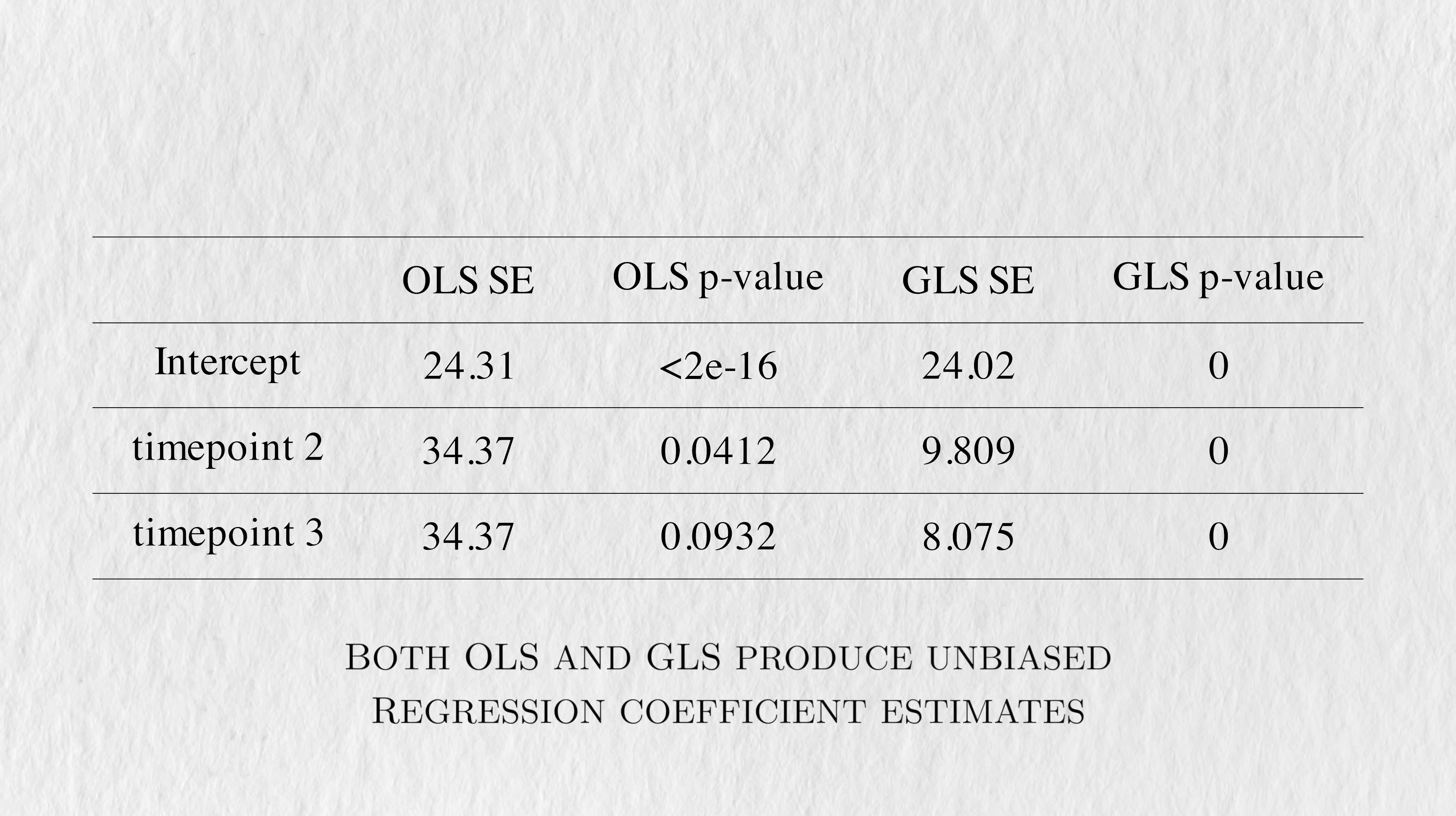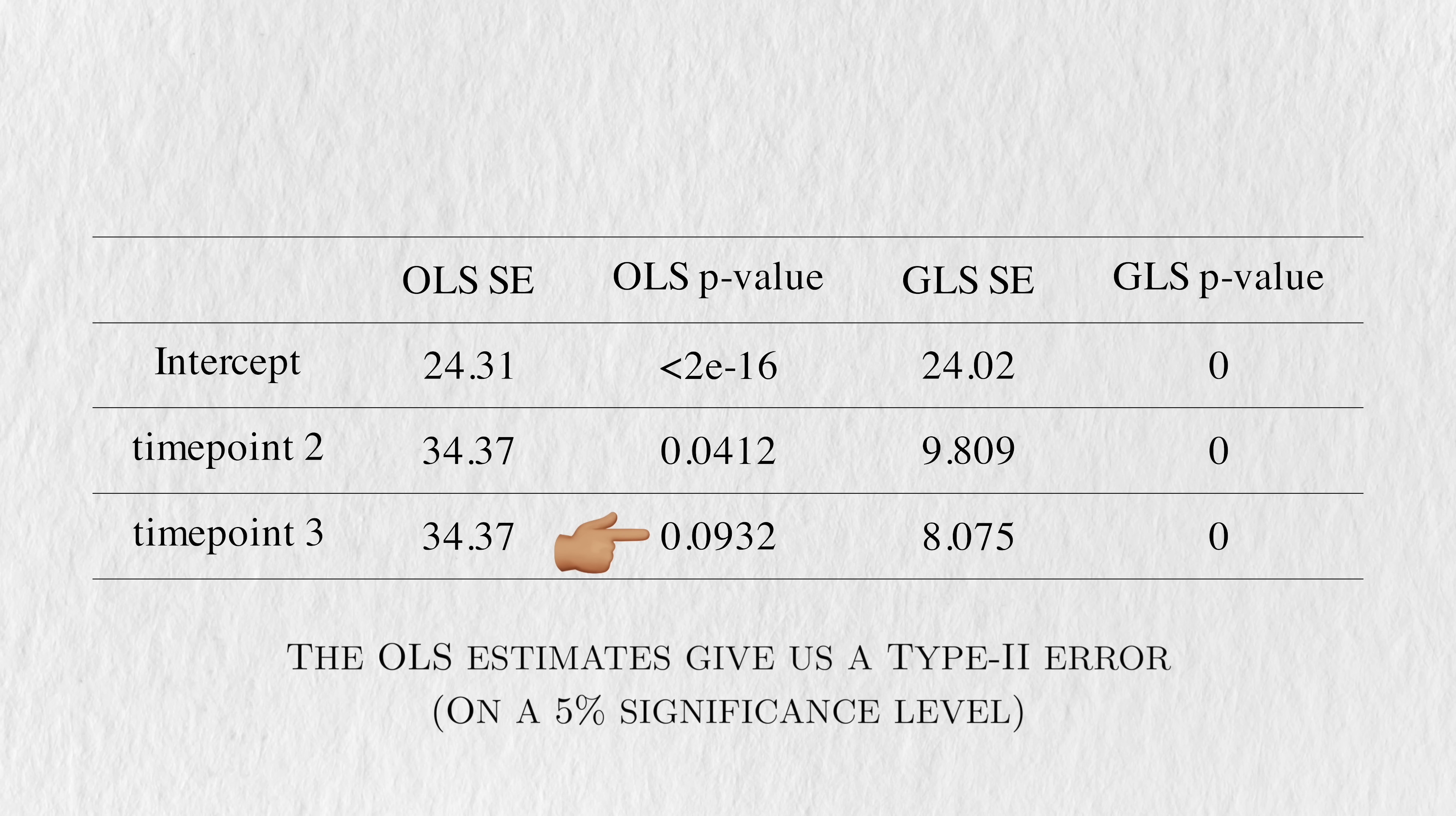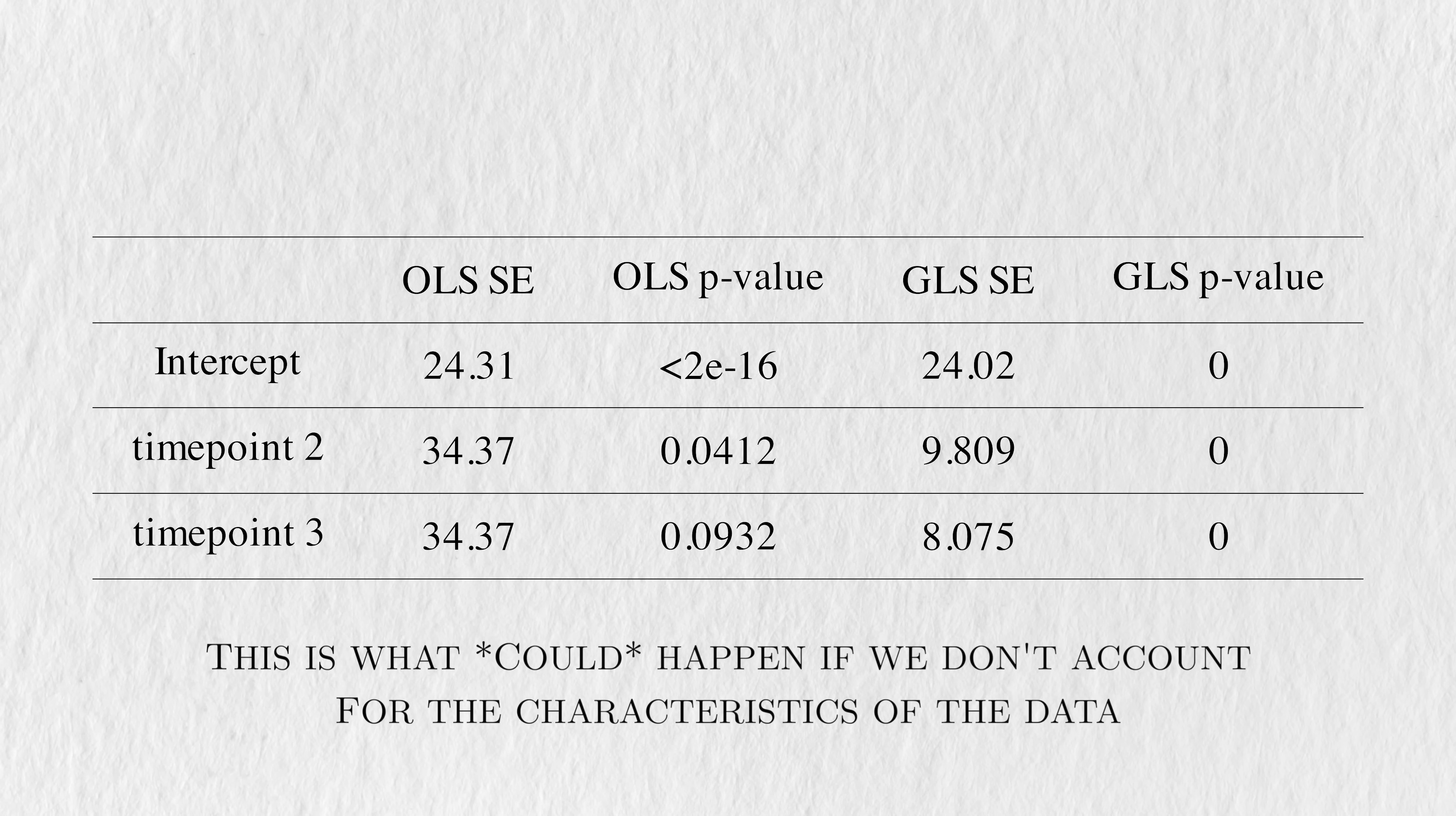But here's a look at the standard errors and p-values associated with each of these coefficients. Even though they estimate the same regression coefficients, ignoring the inherent correlation in the data leads the OLS estimators to have much higher standard deviations. And this has downstream effects on the statistical significance of these coefficients. The OLS estimates managed to detect a significant change at time point 2, at a 5% significance level, but not at time point 3. Compare this to the GLS estimators, which have virtually zero p-value. Keep in mind that I simulated the data such that there are changes over time, so the OLS estimators would lead us to commit a type 2 error. Due to the randomness in data, this won't always happen, but I used this example to highlight what happens when your model doesn't account for the characteristics in the data.